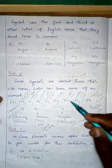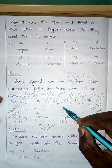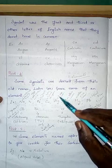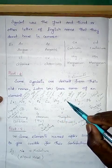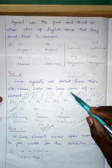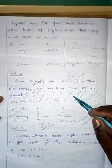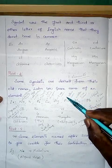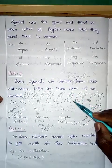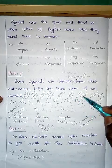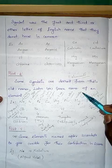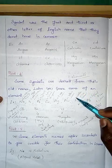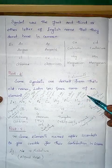Silver has the symbol Ag. The Latin name is argentum, which means silver. Gold has the symbol Au from the Latin aurum, which means yellow color — gold nuggets appear yellow. Mercury has the symbol Hg from the Greek hydrargyrum, meaning water silver, because mercury droplets are shiny like silver.